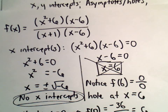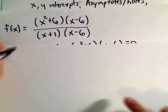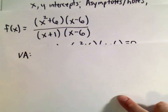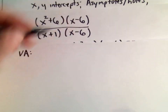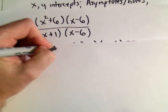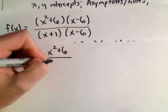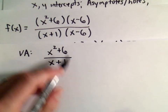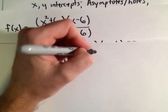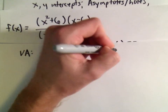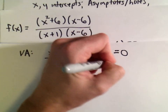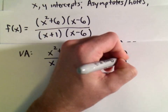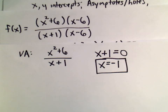Now let's think about asymptotes. To find vertical asymptotes, we factor the function, get rid of any common factors, and look at what's left. We take the remaining denominator and set it equal to zero. Subtracting 1 from both sides gives us x equals negative 1 as our vertical asymptote.